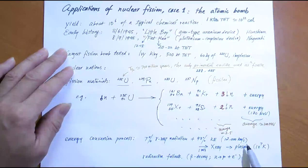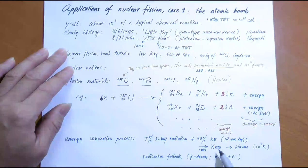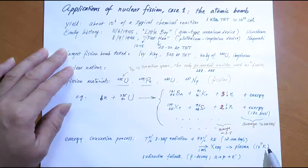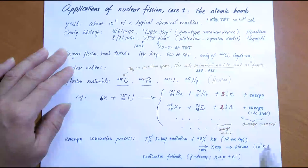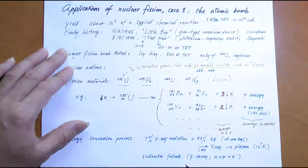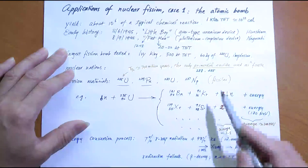As a result, the core of the bomb sees its temperature rise to such a high value it becomes plasma — about 10 million Kelvin. All of this happens within a millisecond. After that, even though the explosion has stopped, radiation still exists because all the fission products Y and Z are radioactive.